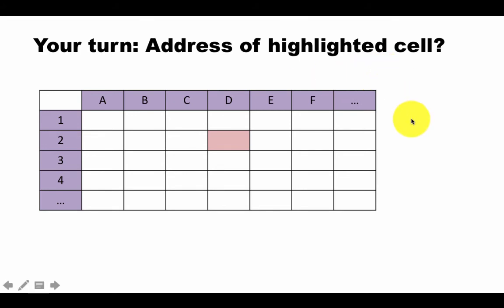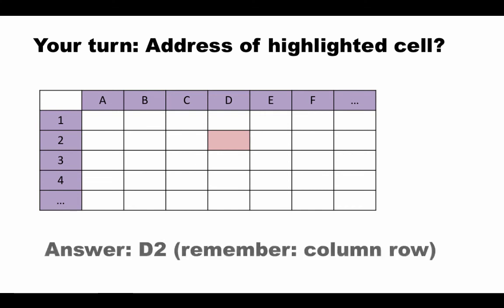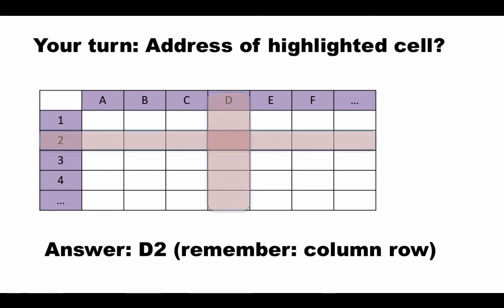I assume you've now thought about it and you've got an answer. The correct answer is D2, because this cell is in column D and it's in row 2, and therefore the cell address is D2. Remember, a cell address is comprised of the column name and the row number combined.